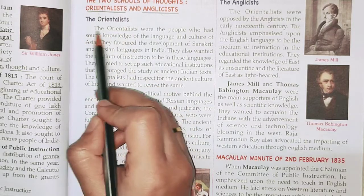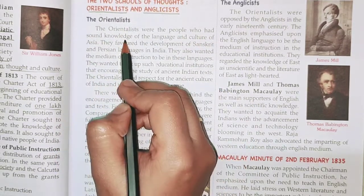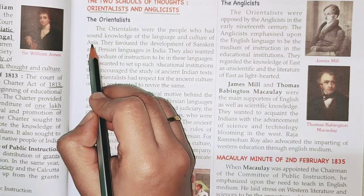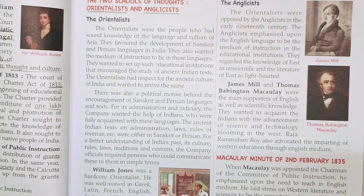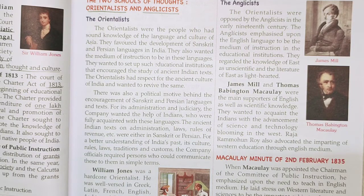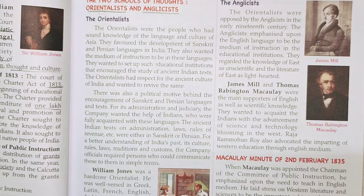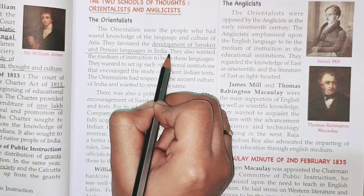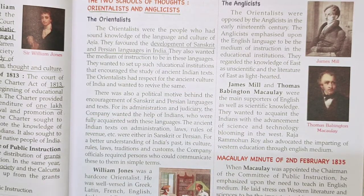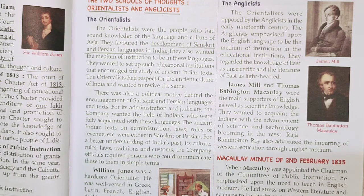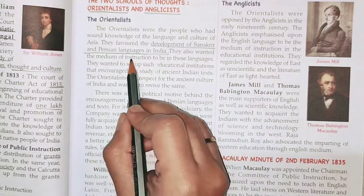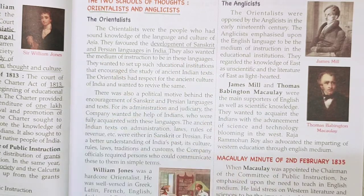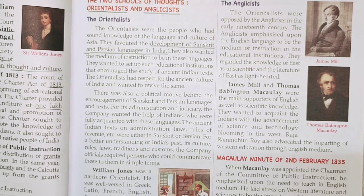The Orientalists were people who had sound knowledge of the language and culture of Asia. India lies in the Asian continent. These people favoured the development of Sanskrit and Persian languages in India — they wanted these to be the medium of instruction, and for other subjects to also be taught in Sanskrit and Persian.